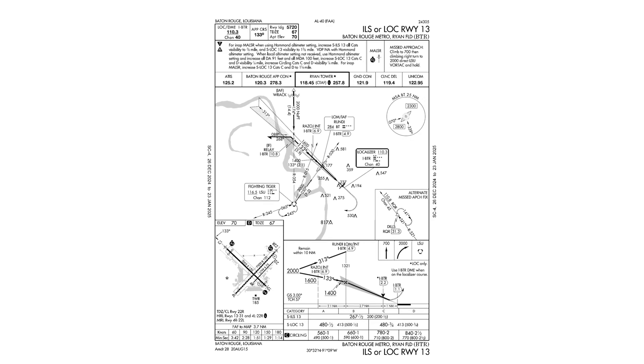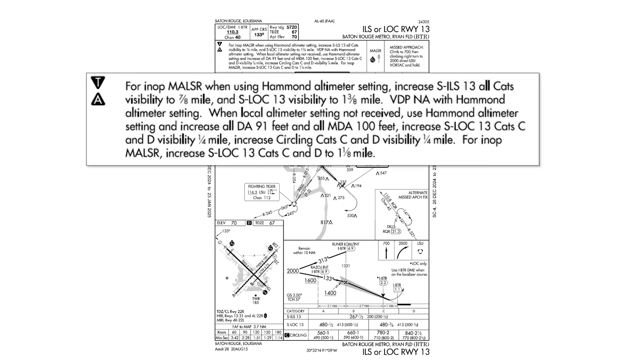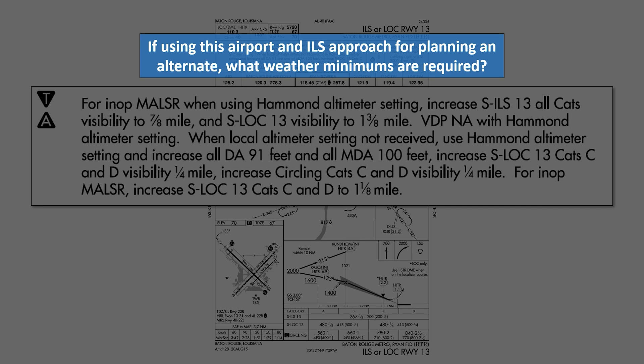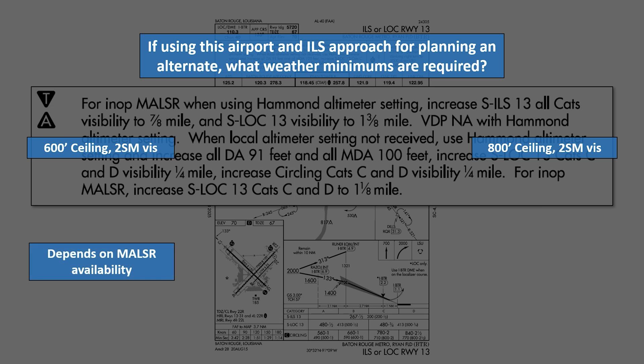For the next question, we'll look at the notes section. If we're going to use Baton Rouge and the ILS approach in our alternate planning, what weather minimums do we need to have? 600-foot ceiling and 2 miles of visibility, 800-foot ceiling and 2 miles of visibility, it depends on if the MOUSER is available, or you should consult the terminal procedure publication?